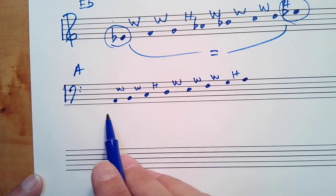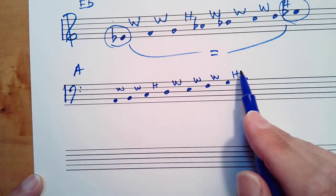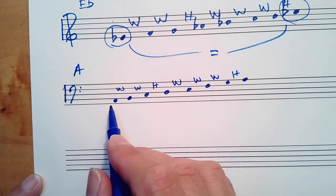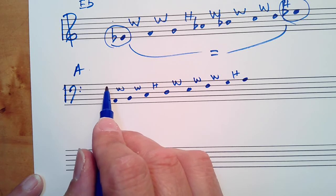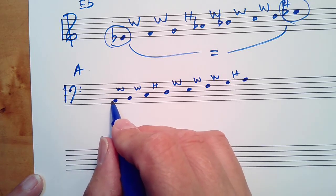Step one was writing the letters. Step two, writing the pattern of whole steps and half steps. And now we add accidentals so that the scale corresponds to the whole steps and half steps. So this is a whole step.